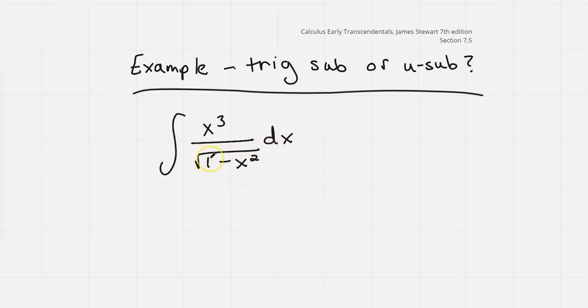When I see, this is supposed to be a plus actually, so it's a square root of 1 plus x squared. When I see that square root of 1 plus x squared, the x squared and the square root immediately have me thinking trig sub, because we use those trig identities to kind of get rid of that plus sign.